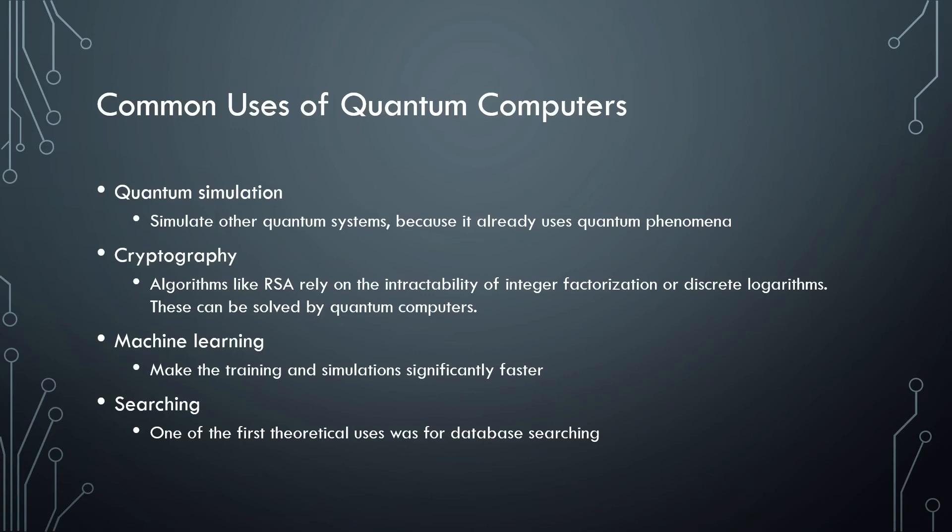The next use is machine learning. This one's pretty straightforward. It is faster to train and simulate a situation for machine learning on a quantum computer. This is one of the main areas that is still being explored and has a lot of focus on it right now.